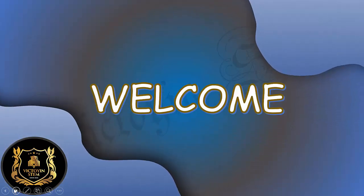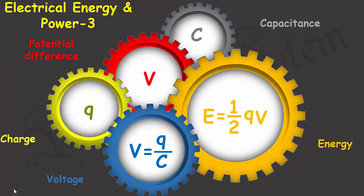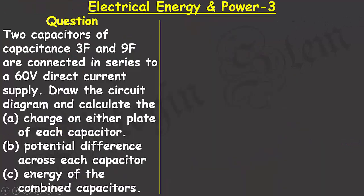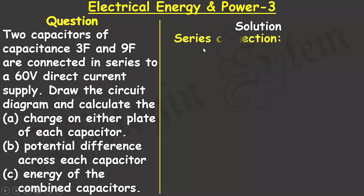Welcome to my YouTube video. Today I'll solve a problem on electrical energy and power. The question: two capacitors of capacitance 3 farad and 9 farad are connected in series to a 60-volt direct current supply. Draw the circuit diagram and calculate: (a) the charge on either plate of each capacitor, (b) the potential difference across each capacitor, and (c) the energy of the combined capacitors.